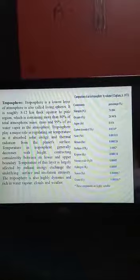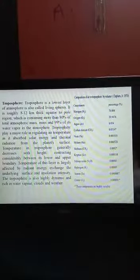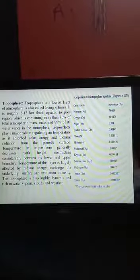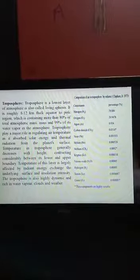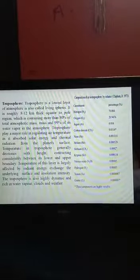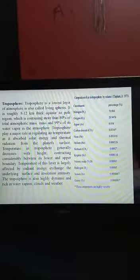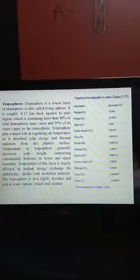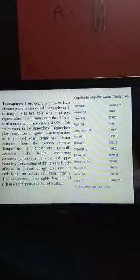Troposphere. Troposphere is the lowest layer of the atmosphere, also called living sphere. It is roughly 8 to 12 kilometers thick, equator to pole region, which is containing more than 80% of total atmospheric mass. Troposphere plays a major role in regulating air temperature as it absorbs solar energy and thermal radiation from the planet's surface.